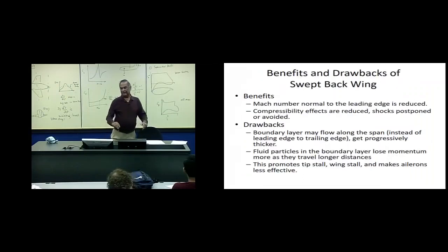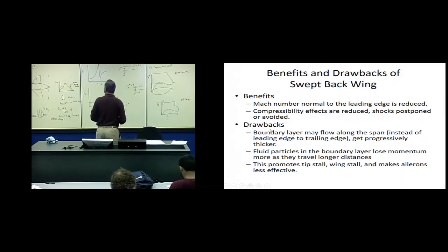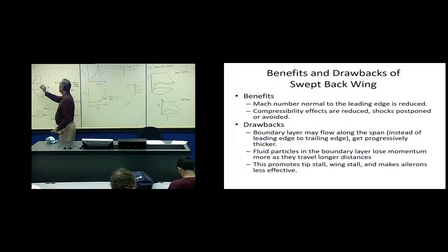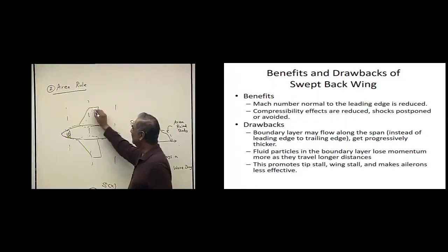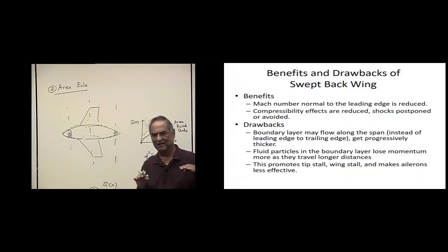Now, let's go back to the swept back wing. What is the benefit? We have already seen the Mach number normal to the leading edge is reduced, compressive effects are reduced, shocks are postponed, these are good things. But one of the drawback is, in the case of a swept back aircraft, boundary layer likes to follow the path of least pressure, you know, it likes to go from high pressure to low pressure. So, it's not unlike the quals exam selection, you always try to find the path of least resistance, so you go to the lowest pressure.